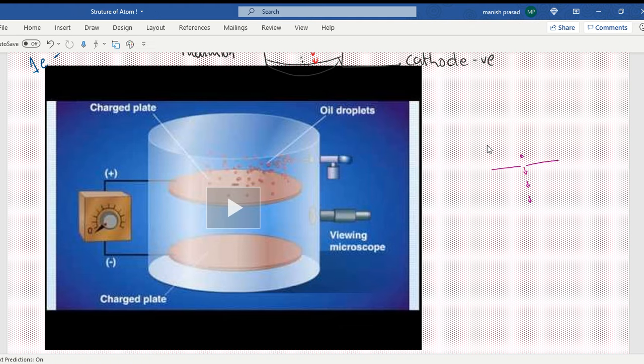But now what I'm doing is I'm applying a high beam out here in the gas, so the gas gets ionized and it releases electrons. Now what happens is the electrons stick to the oil droplet.